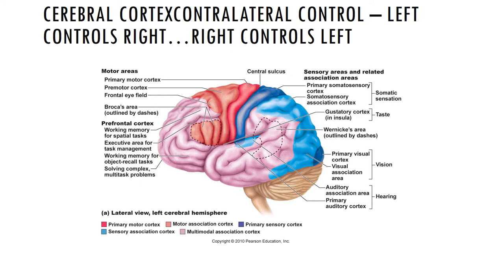Other sensory areas include: the olfactory cortex, located on the medial aspect of the temporal lobe, responsible for the conscious perception of odors or smells; the gustatory cortex, located in the insula and portions of the frontal lobe, involved in the conscious perception of taste; and the visceral sensory cortex, located in the insula, involved in the conscious perception of visceral sensations such as a full bladder or an upset stomach.